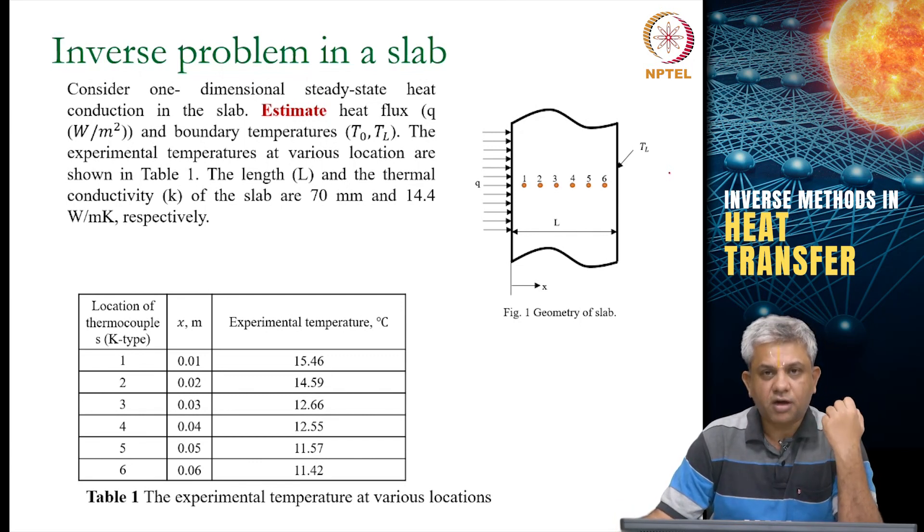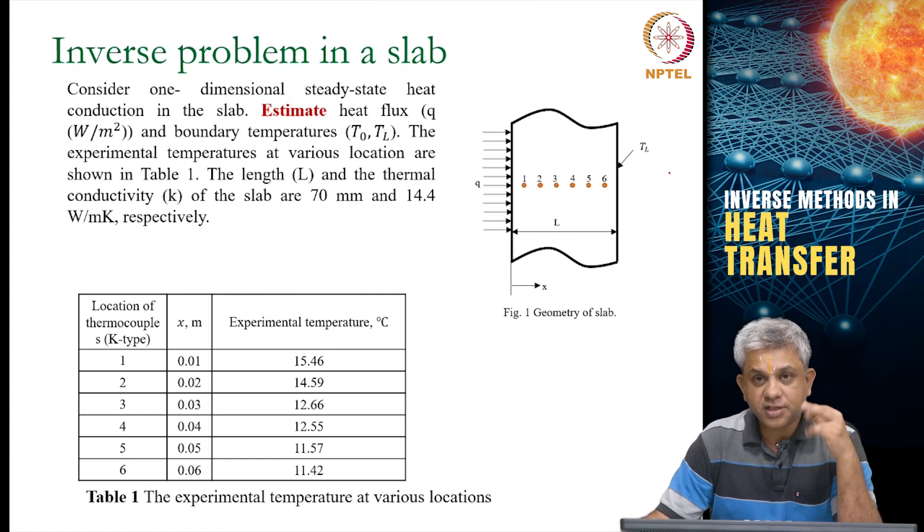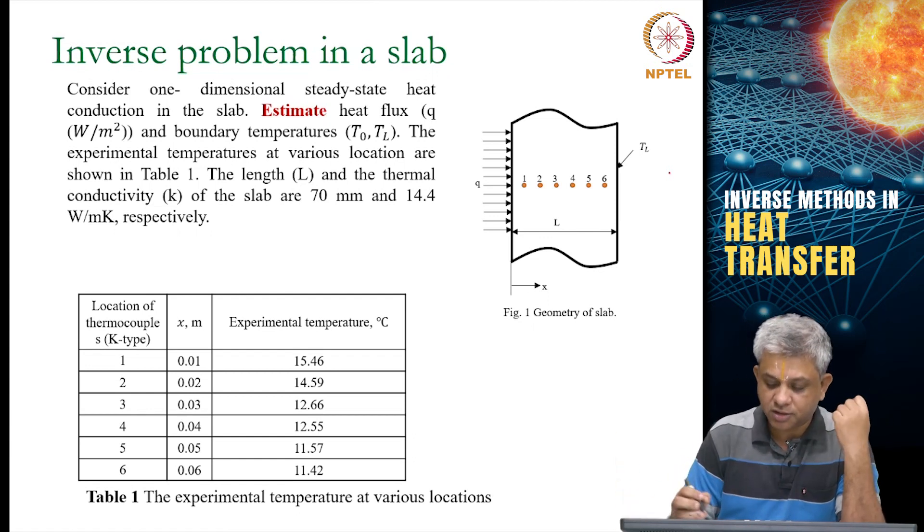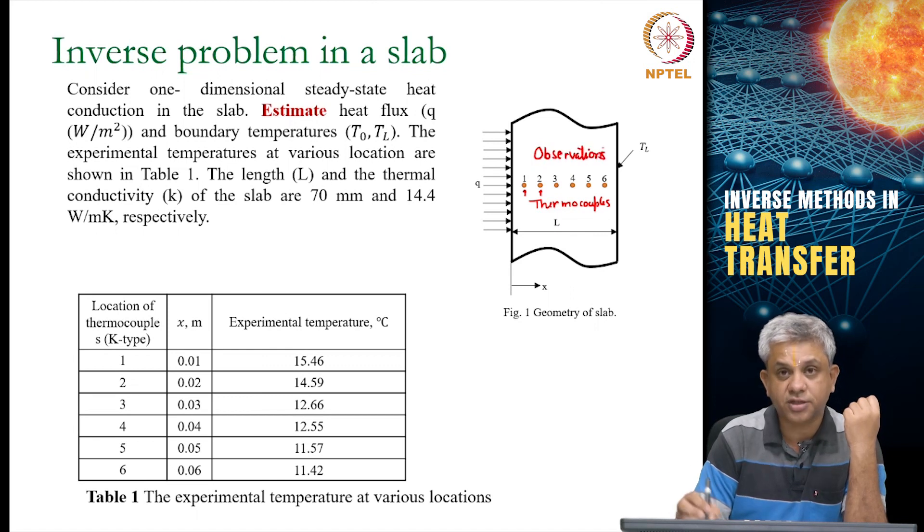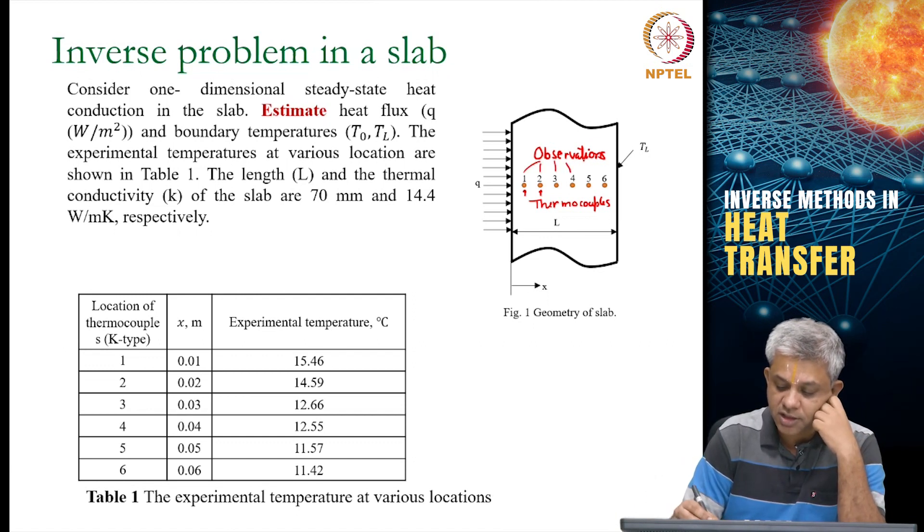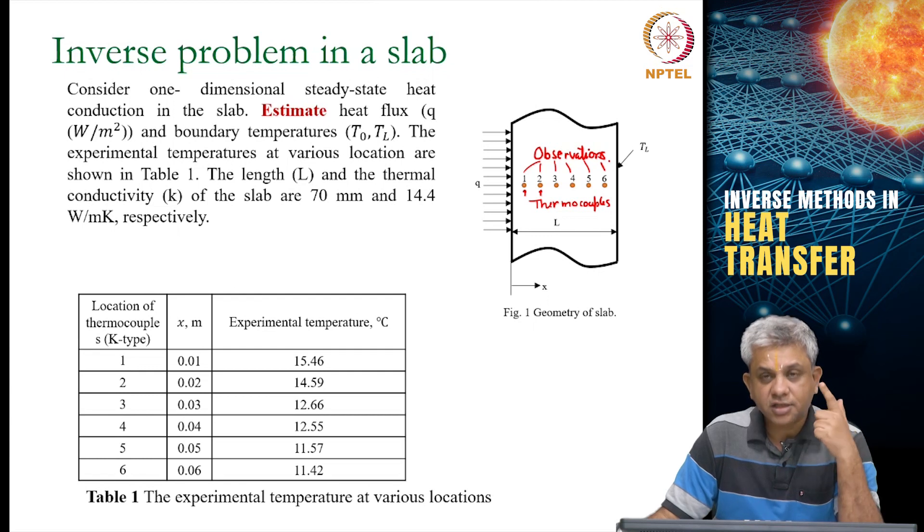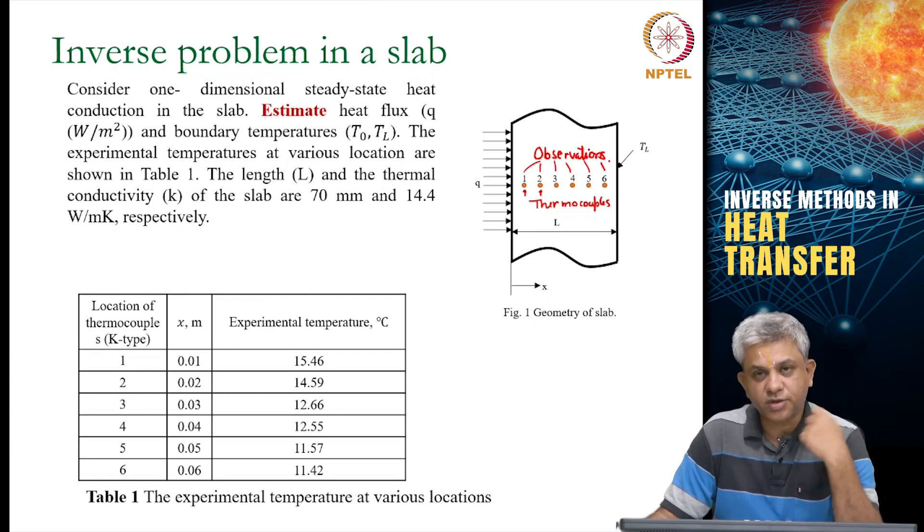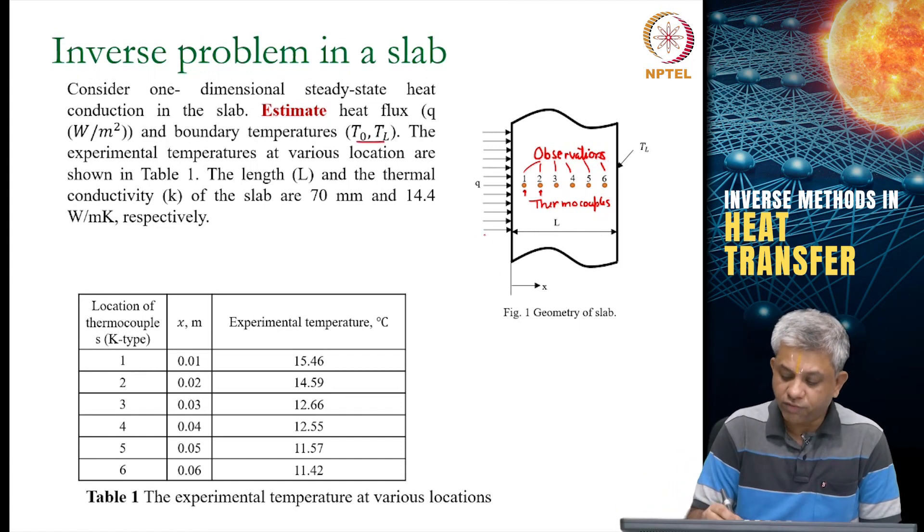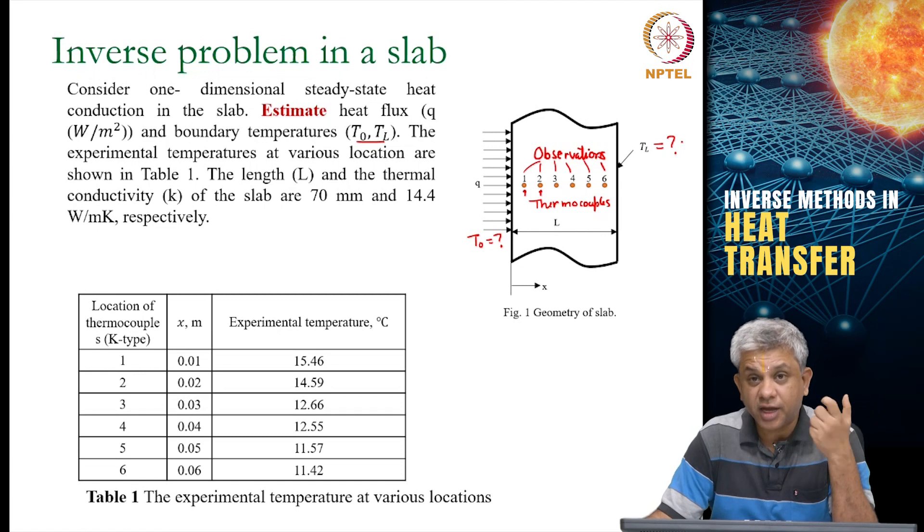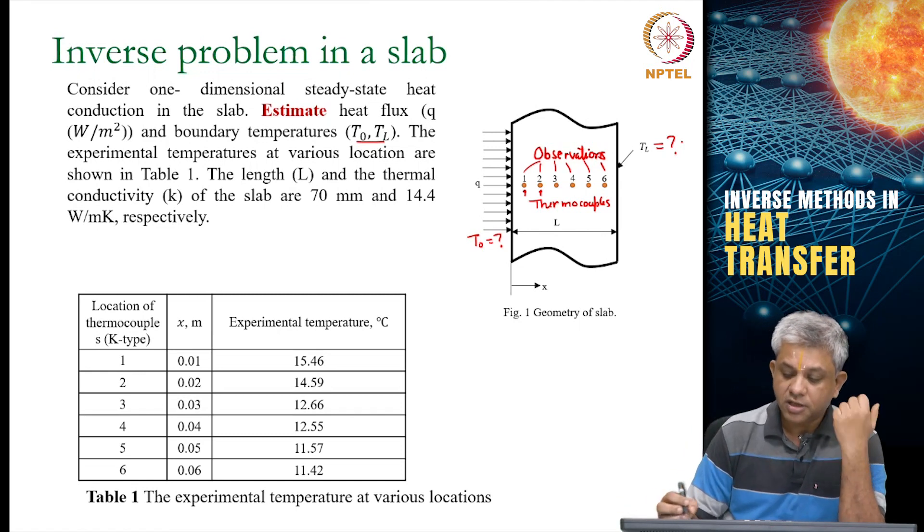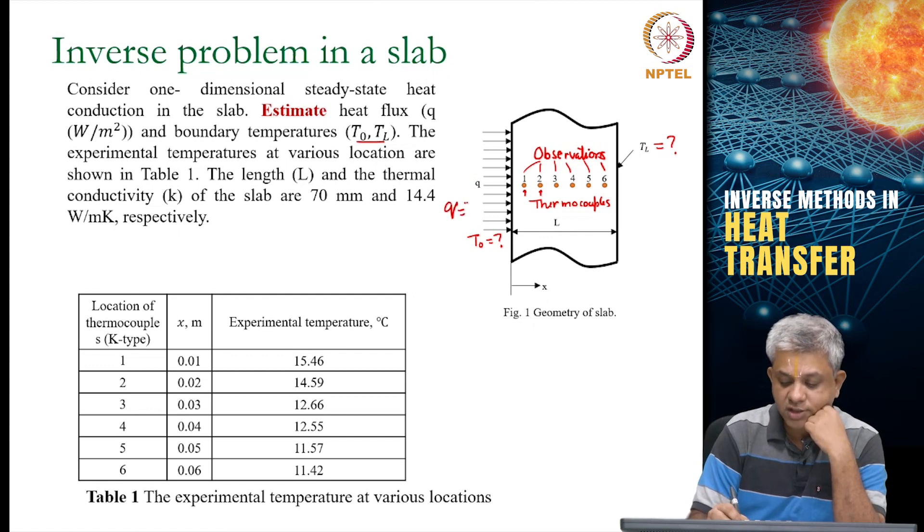Here is the inverse problem. Suppose you are given something else. Instead of giving you the left and right temperatures, suppose I give you measurements based on thermocouples. We are making a series of observations. We now observe the temperatures at these six points and we ask the opposite question: we do not know what the left and right temperatures are, can we find those out? Can we at least estimate them within a certain range? Similarly, the question is what is the heat flux?